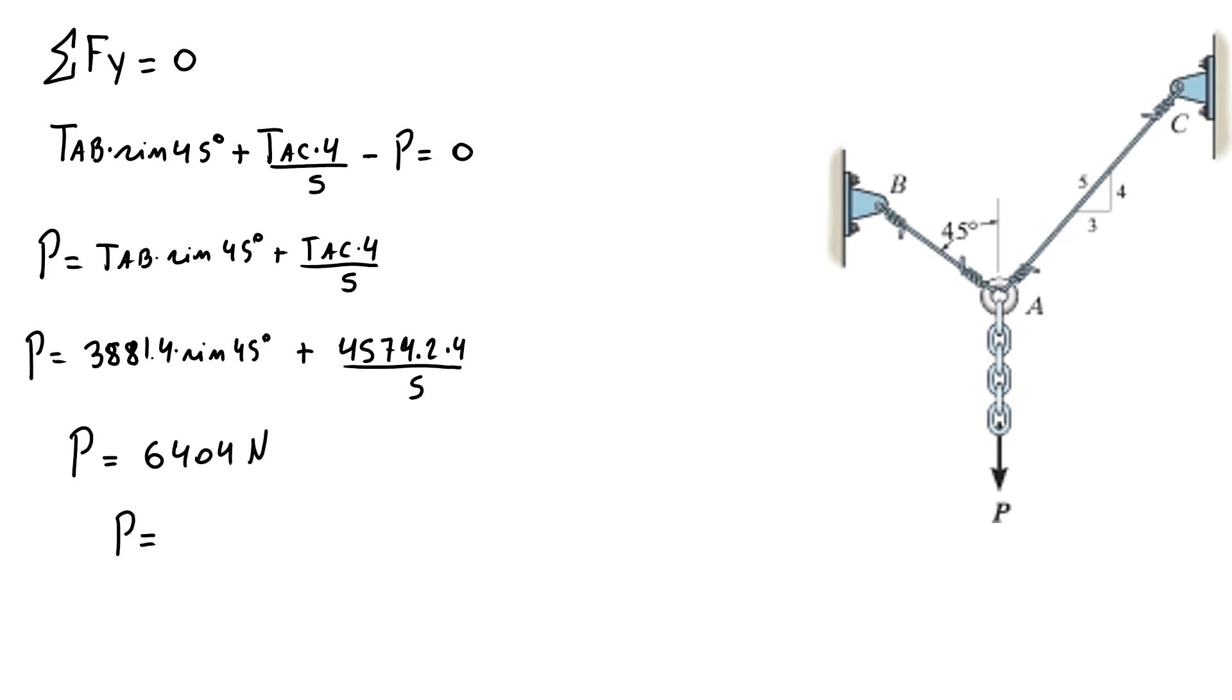Or, if you prefer to use three figures, you have 6.40 kN. So our maximum value of P is 6.40 kN. Thank you.